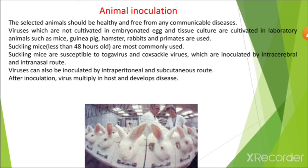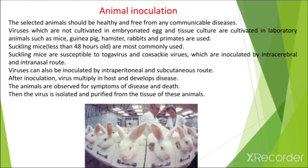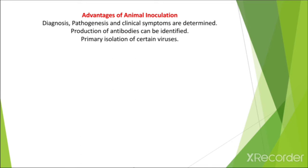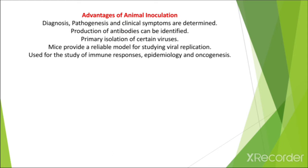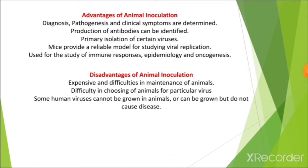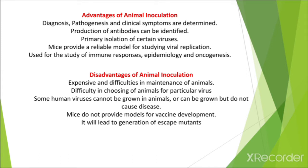After inoculation, viruses start to multiply in the host and develop disease. The animals are observed for symptoms of disease and death, then the virus is isolated and purified from the tissue. Advantages include: diagnosis, pathogenesis, and clinical symptoms can be determined; antibody production can be identified; and mice provide a reliable model for studying viral replication, immune responses, epidemiology, and oncogenesis. Disadvantages include: the method is expensive, maintenance of animals is difficult, some human viruses cannot be grown in animals, mice do not provide models for vaccine development, and there are animal welfare concerns.